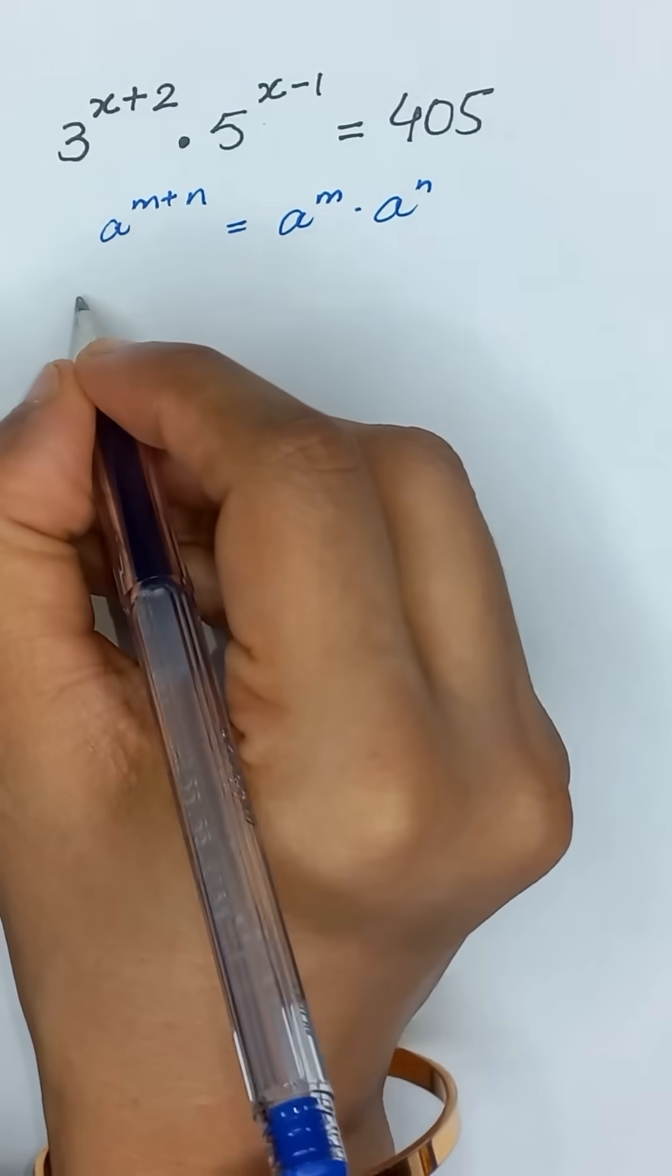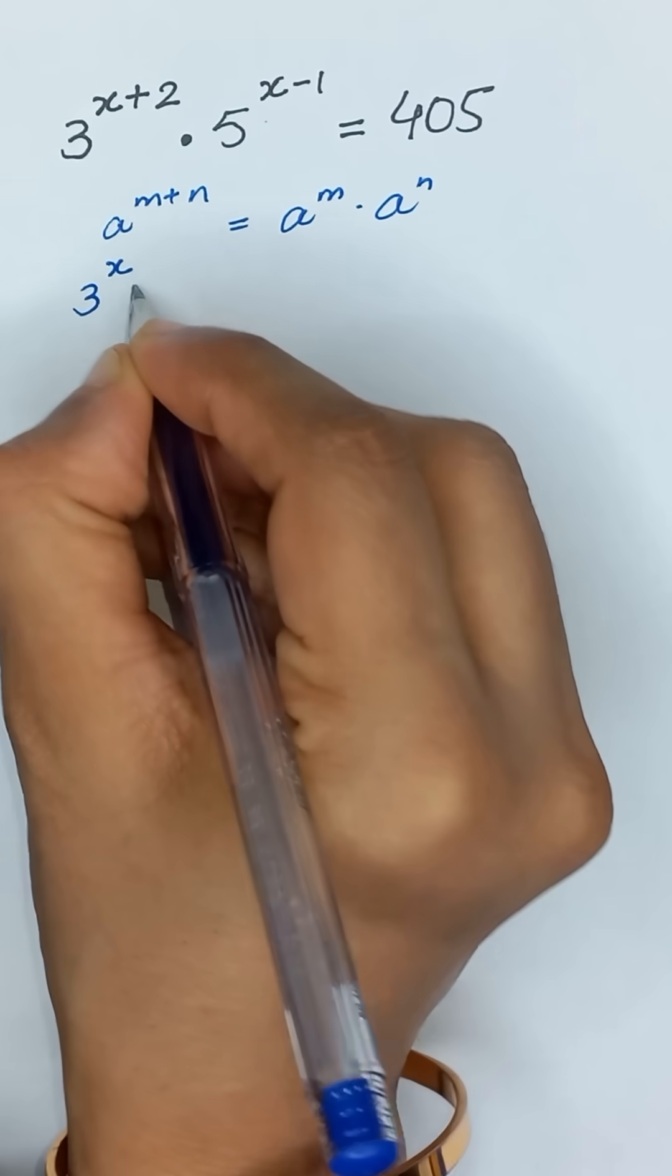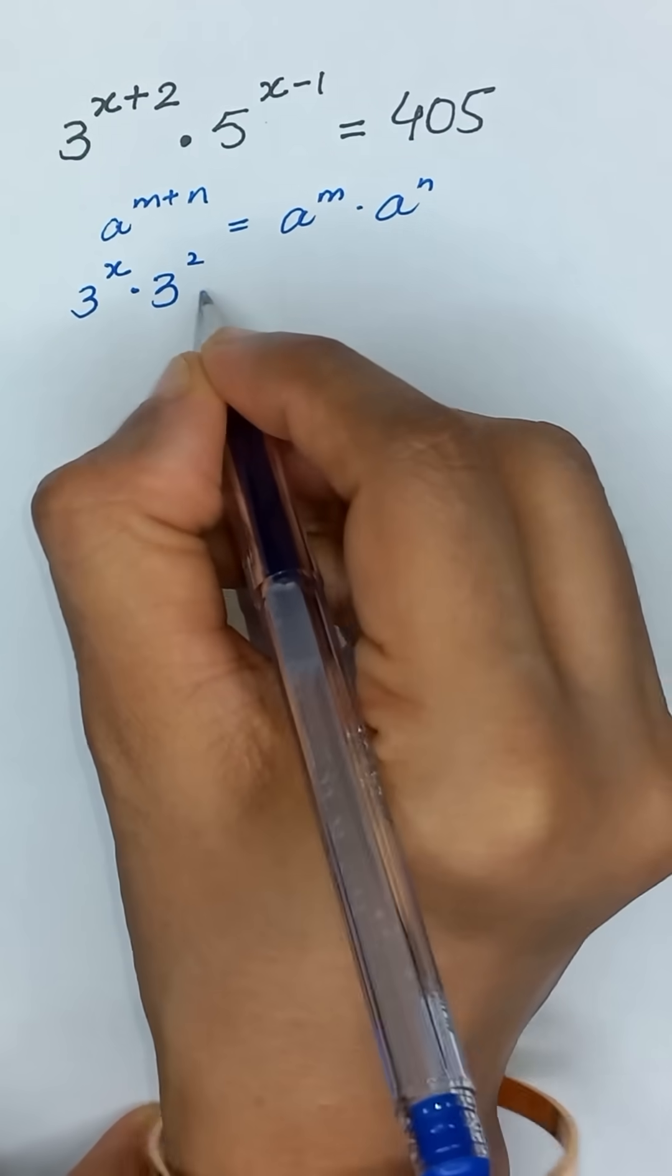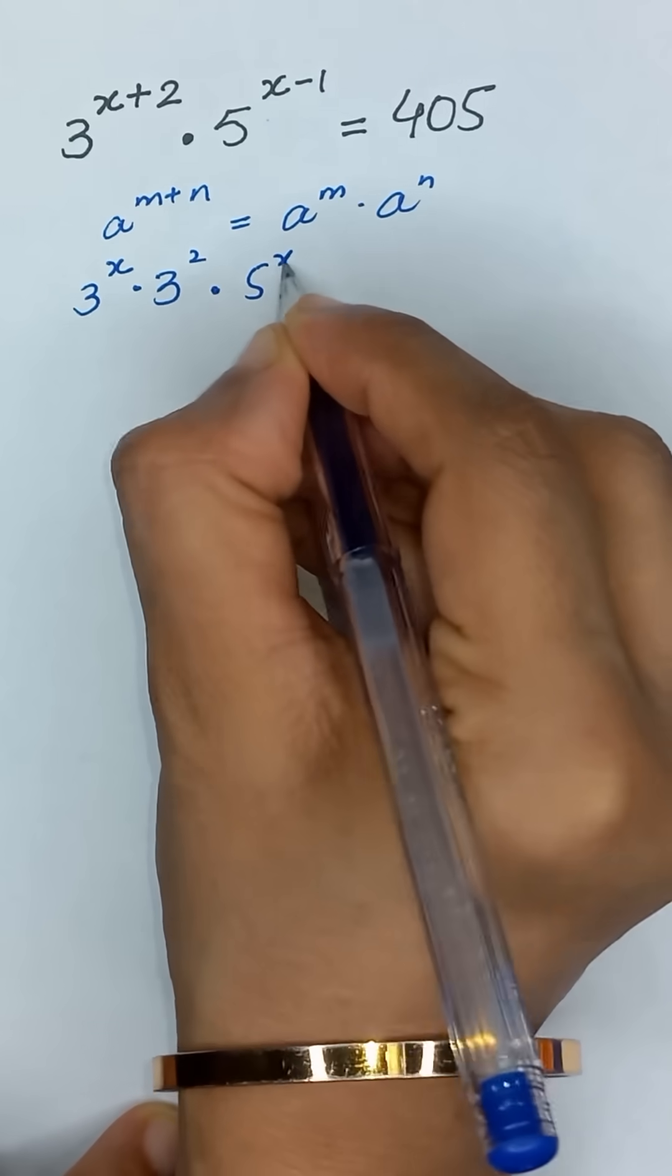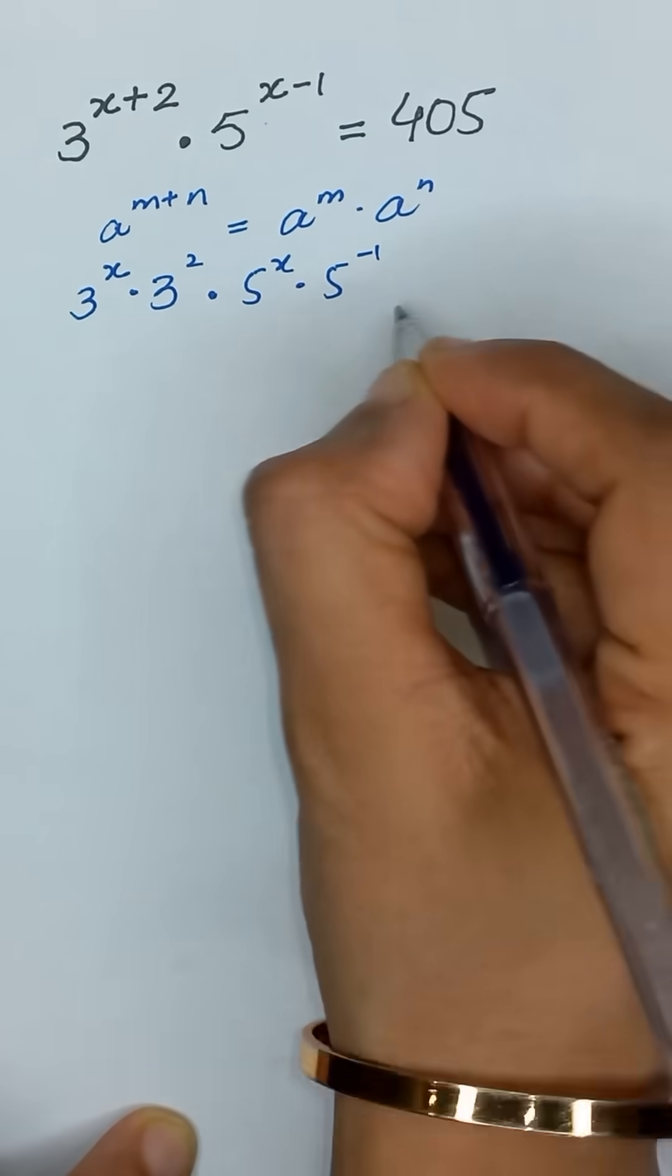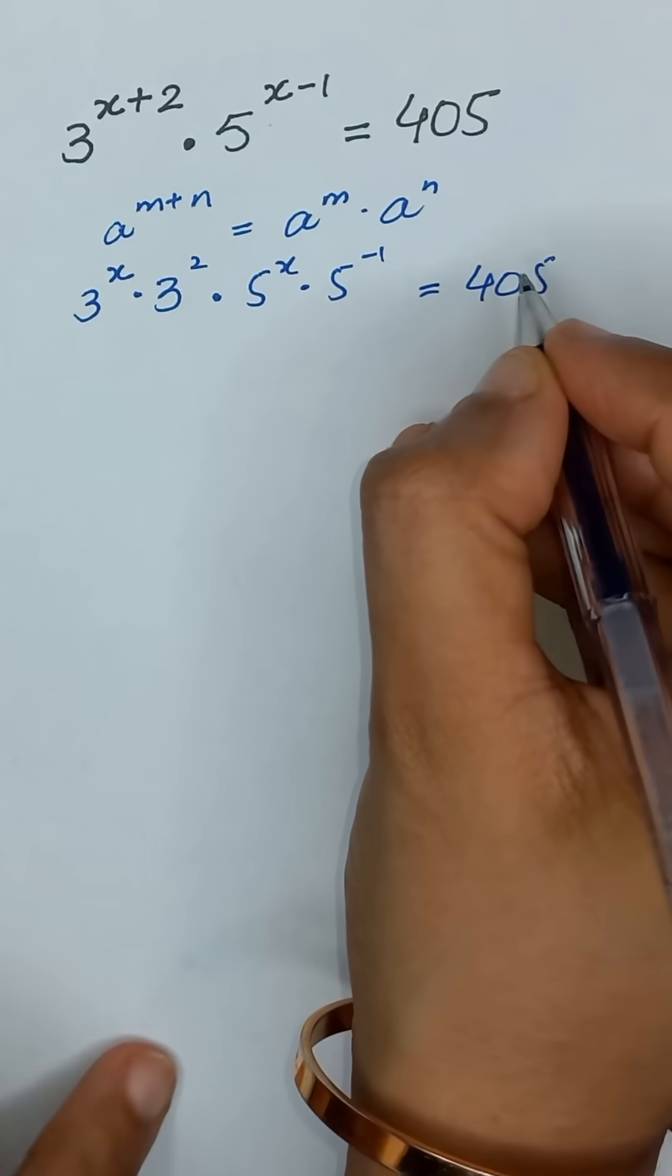So we can write it as 3 to the power x times 3 squared times 5 to the power x times 5 to the power minus 1 is equal to 405.